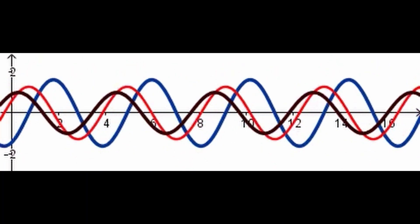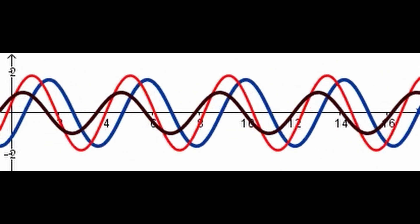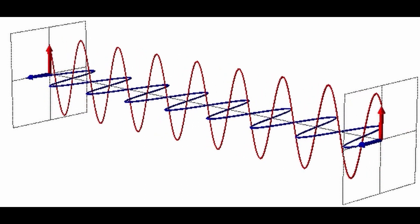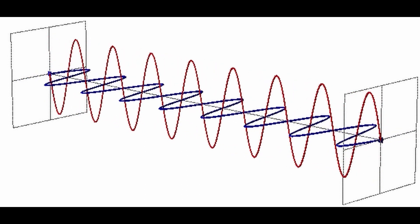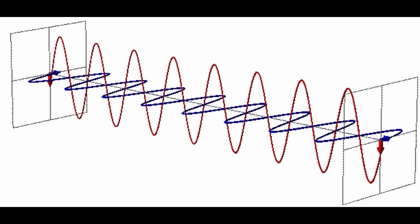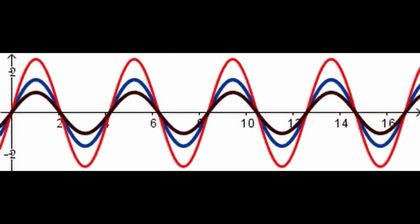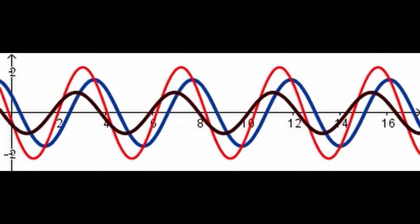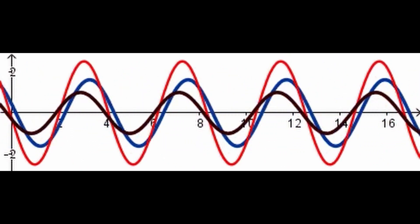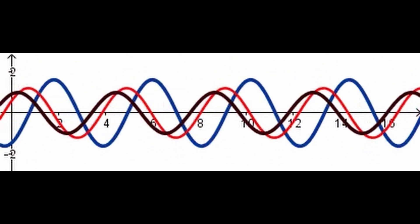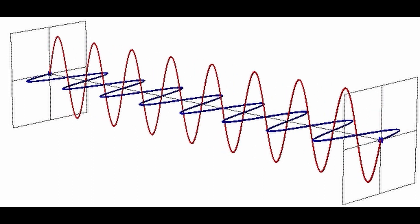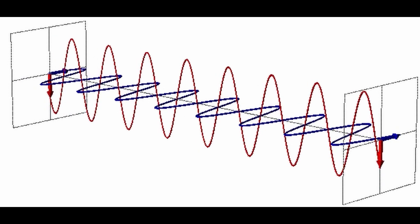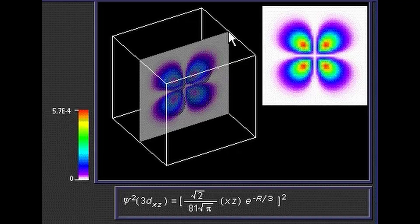The wave function also plays a crucial role in determining the energy levels of quantum systems. The Schrödinger equation, which is the fundamental equation of quantum mechanics, allows us to calculate the wave function of a system and determine its energy levels. This equation takes into account the potential energy of the system and the kinetic energy of the particles. The wave function is a purely mathematical construct and does not represent a physical object; it is simply a tool used to describe the behavior of subatomic particles. However, it is a powerful tool that has allowed incredible advances in fields such as quantum computing, quantum cryptography, and quantum mechanics as a whole.